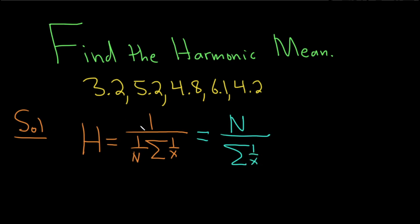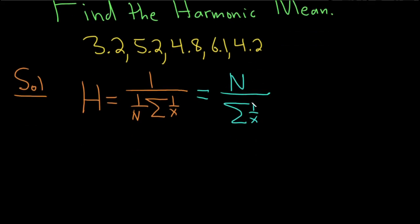And the reason is, if you have 1 and you're dividing it by 1 over n, it's the same thing as multiplying by n over 1. So you can just put the n upstairs like that.